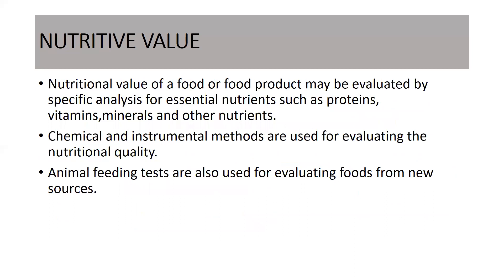Now, coming to the hidden characteristics such as nutritive value. Nutritive value and the toxicity present in food both come under the hidden characteristics, as a consumer is not able to identify them. The nutritional value of a food or food product may be evaluated by specific analysis for essential nutrients such as proteins, vitamins, minerals, and other nutrients. Chemical and instrumental methods are used for evaluating the nutritional quality. Animal feeding tests are also used for evaluating foods from new sources.